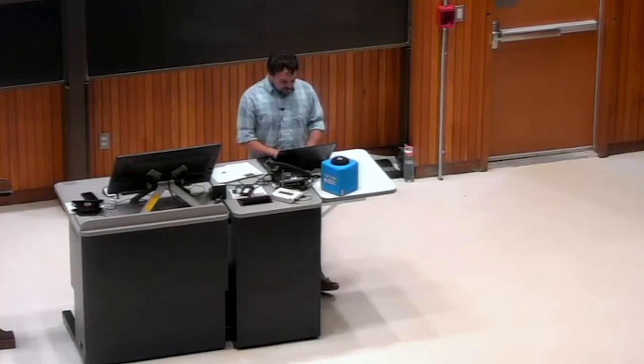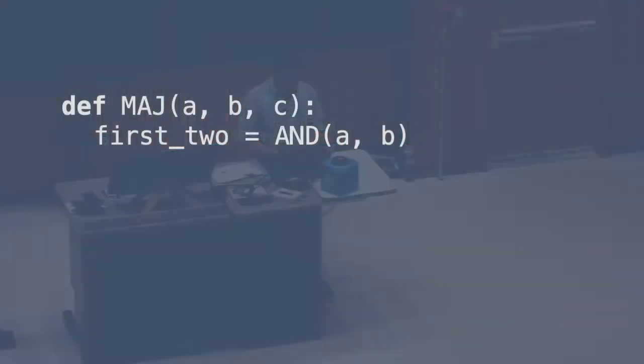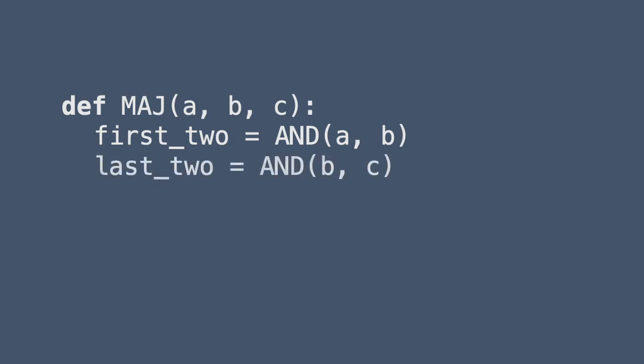What we can do is we can have our first pair—we said that could be and applied to A with B. And then maybe we have the last pair is equal to and applied on B and C. And then we had maybe the first with the last is equal to and applied to A with C.